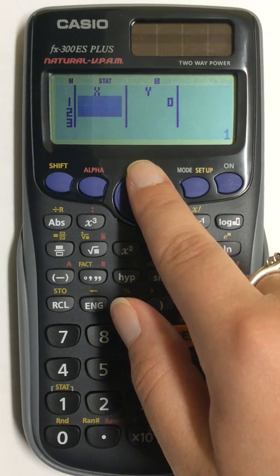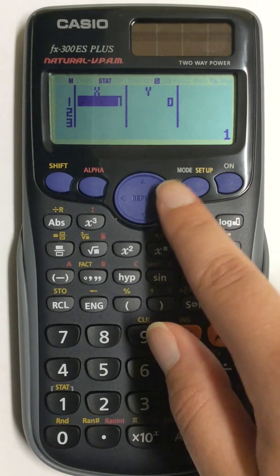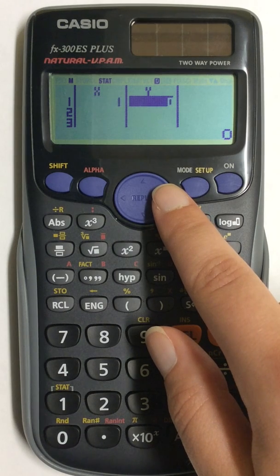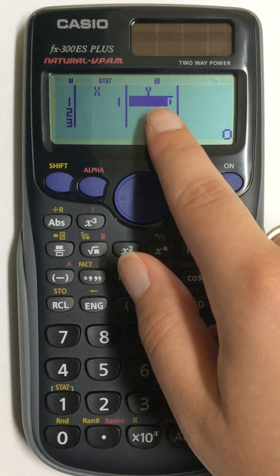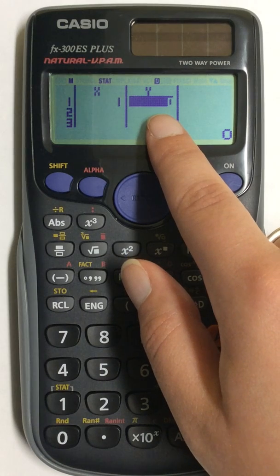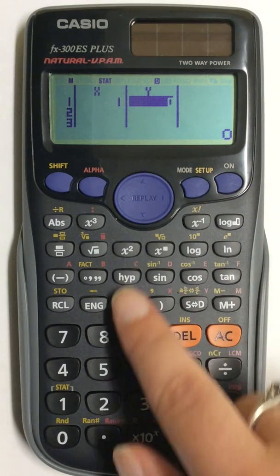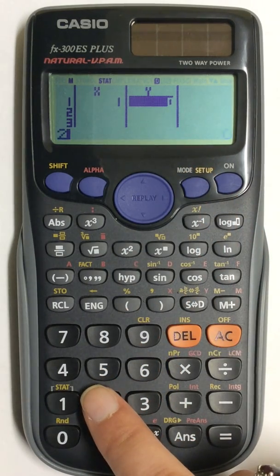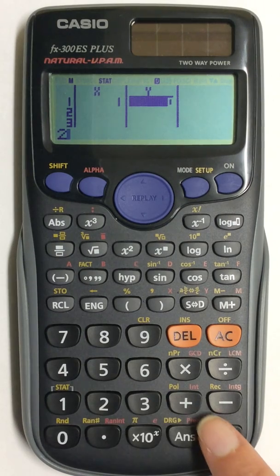I'm going to press the up arrow and move over so that it highlights the number in the Y column. In order to change it, I simply put in the number that I want and press equals.